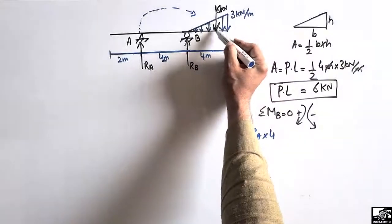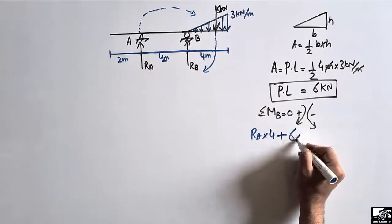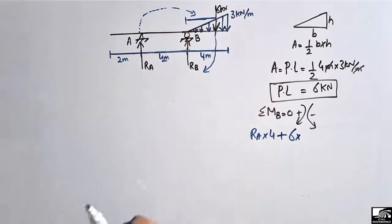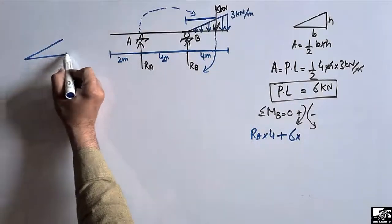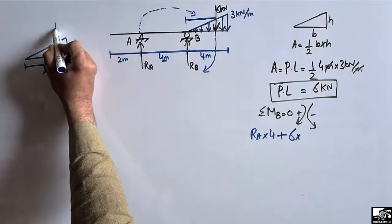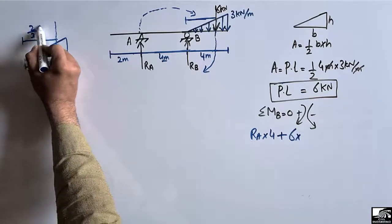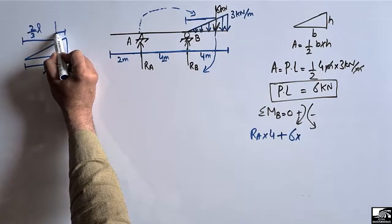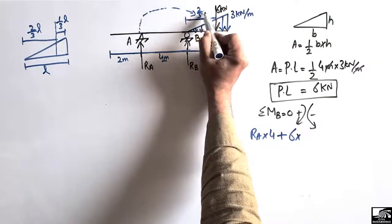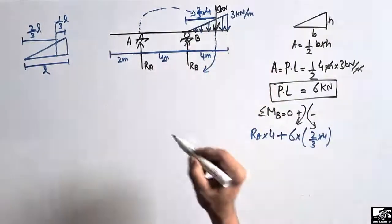The 6 kilo Newton load also creates a clockwise moment about point B, so it is taken as positive: 6 kilo Newton multiplied by its moment arm. For a triangle, the centroid is located at two-thirds of the base length from the larger end. The distance from the larger end up to the centroid is two-thirds of L, and from the other end it is one-third of L. So the moment arm for the 6 kilo Newton load is two-thirds of 4 meters.